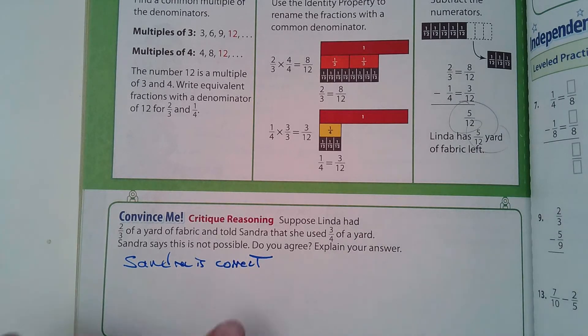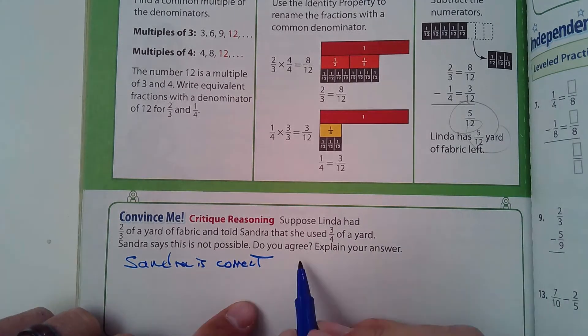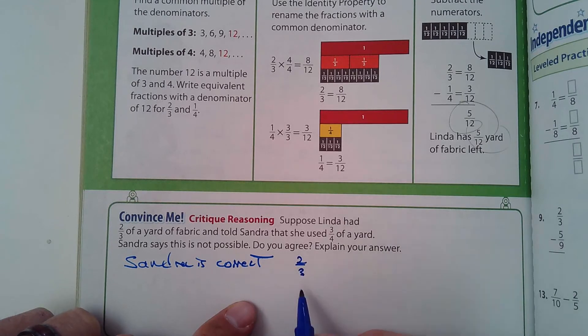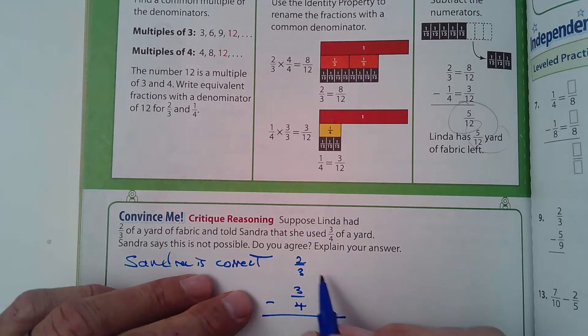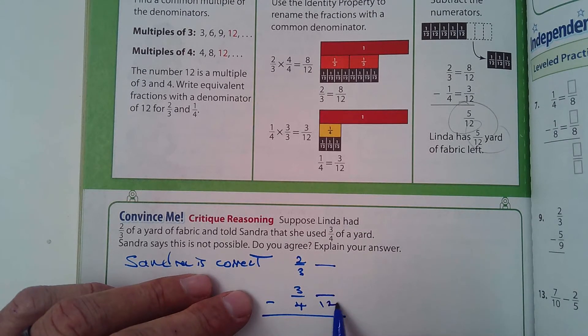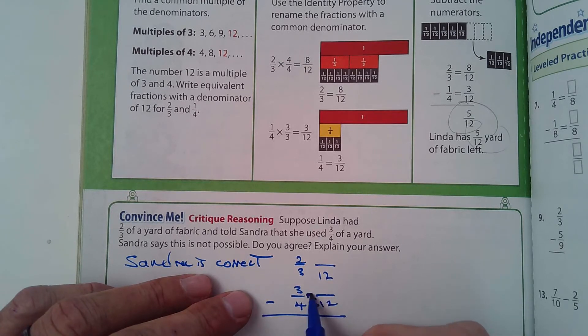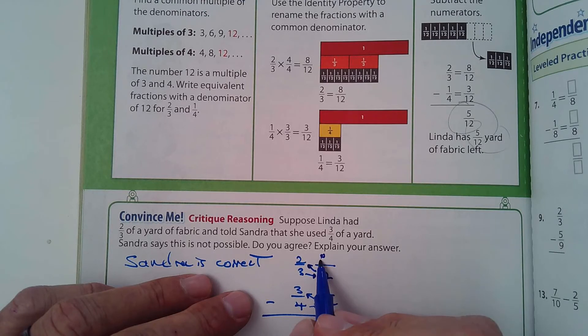So, let's see here. Sandra is correct. And that's because, well, one is larger than the other. So let me show you first. Let's just take two-thirds here. And let's take three-fourths. Let's get a common denominator. So what's going to be the common denominator? Between three and four, it's going to be 12 again.